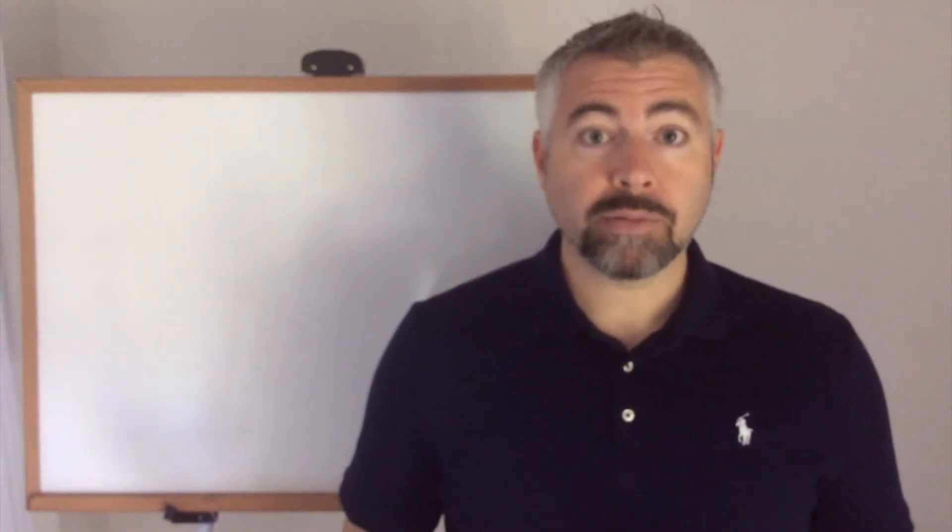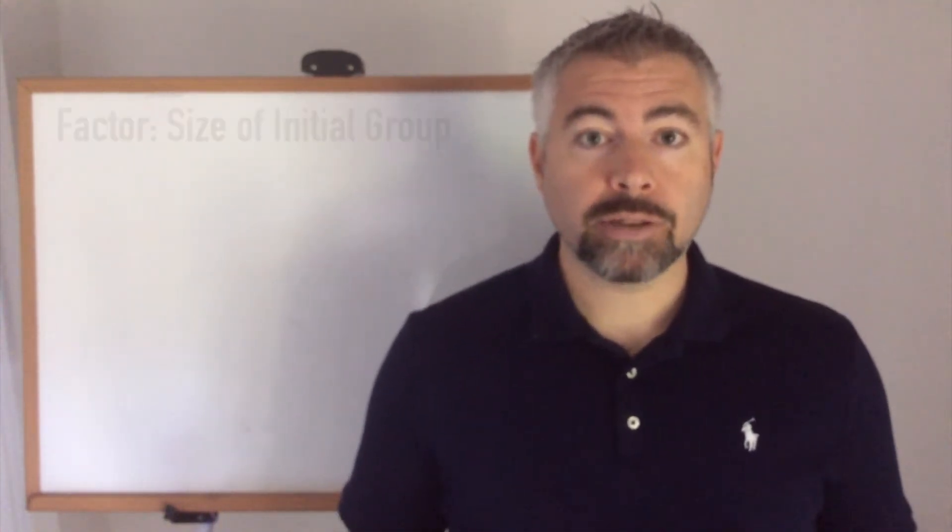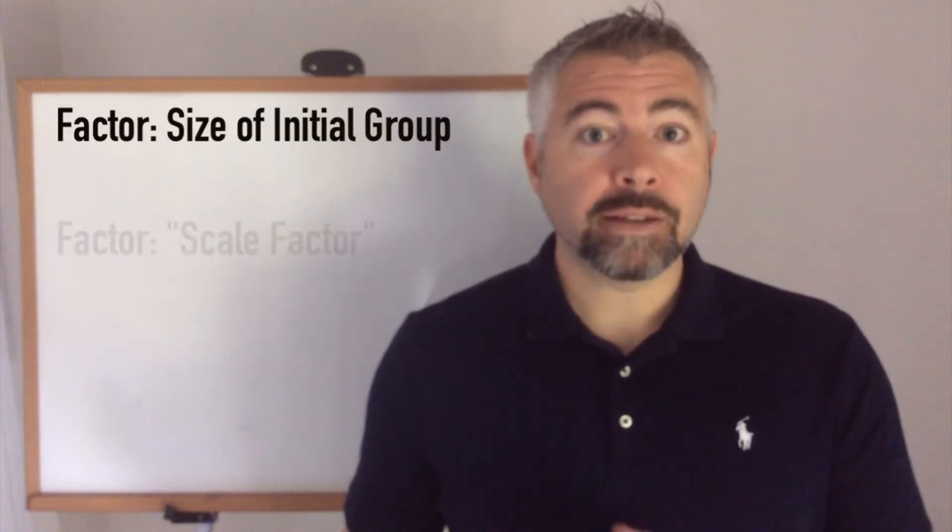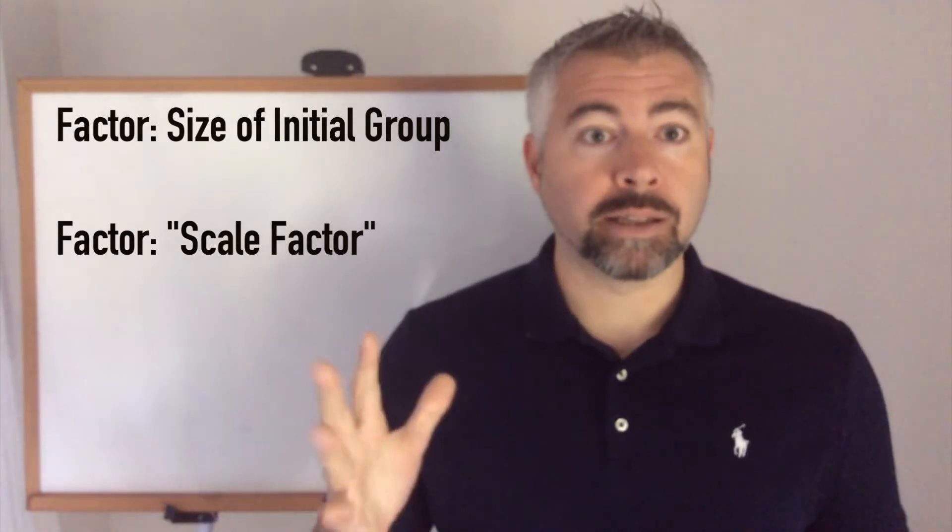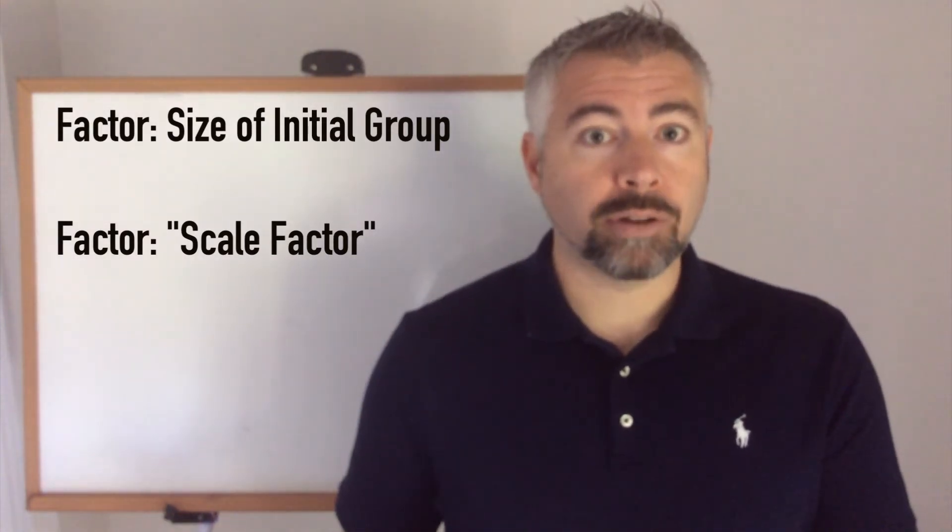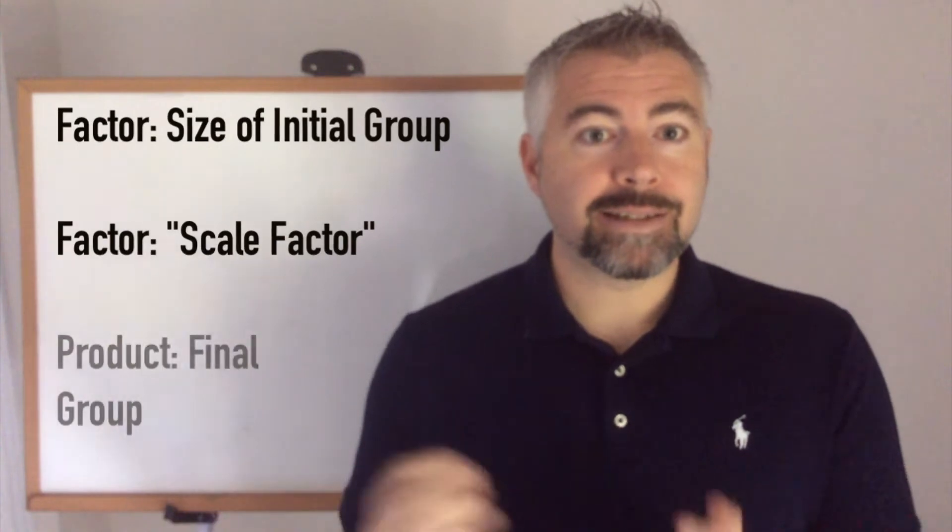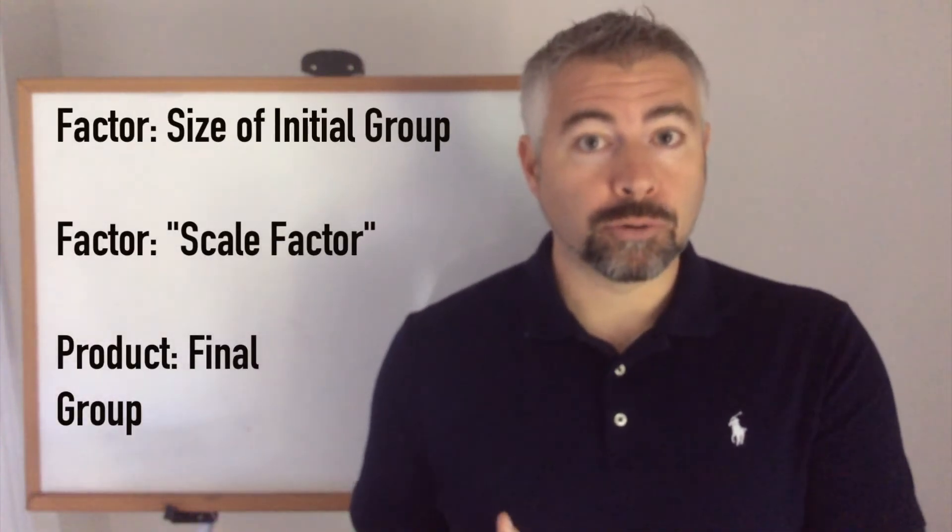With multiplicative comparison, one factor is the size of the original group, and the other factor is what we call the scale factor. How much are we scaling it up or down? And then the product is the size of the other group.